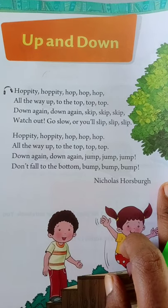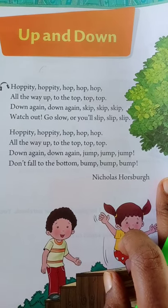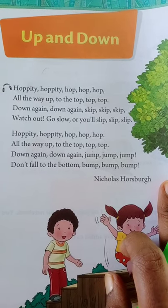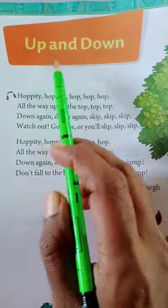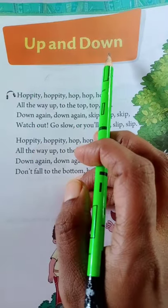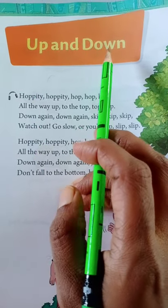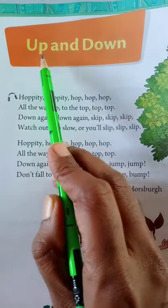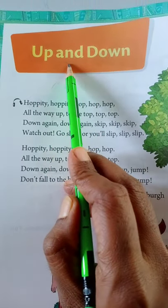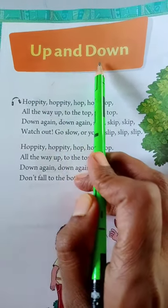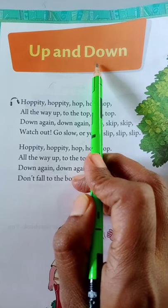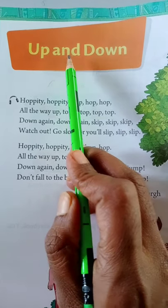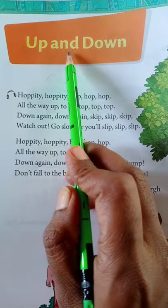Hello children, let's go for poem number 3, Up and Down. What is it? Up and Down. So, let us read the poem first.